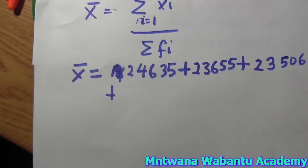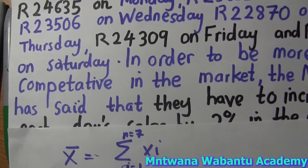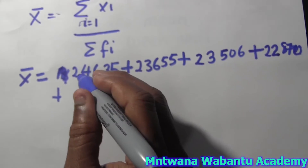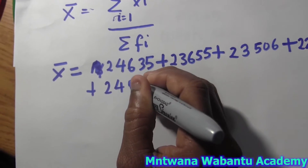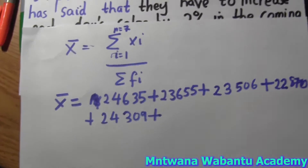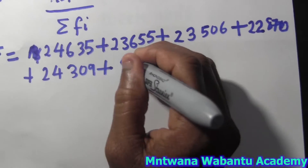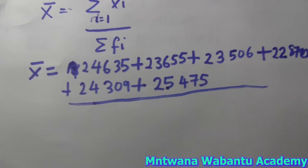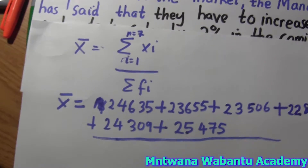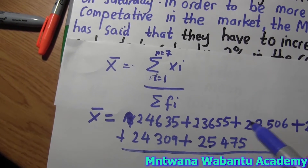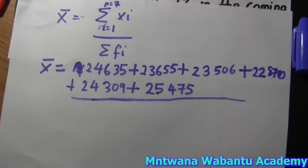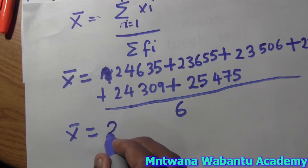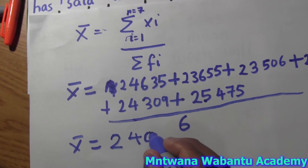Now we go for the fourth one: 2, 4, 3, 0, 9. And the last one is 2, 5, 4, 7, 0, 5. All of these divided by the number of frequencies. How many are there? There are 6 days. So we divide by 6. If you plug that into the calculator, this gives you 2407.5. So this is the mean for this week.